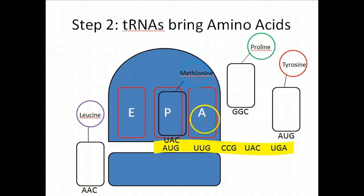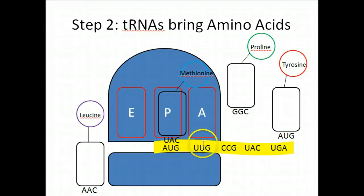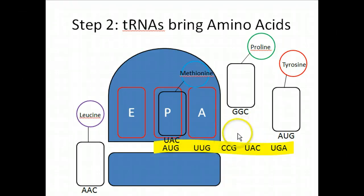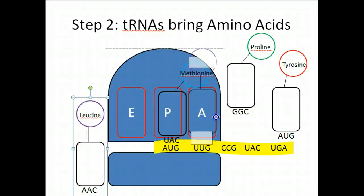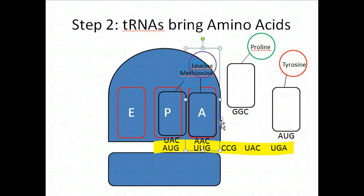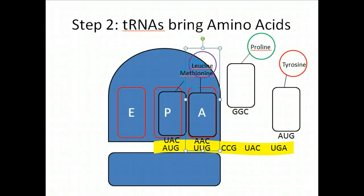Next, you need to bring in another tRNA carrying another amino acid. The next codon in your sequence is UUG. You can look up UUG in your codon table, or you can find a tRNA with a complementary anticodon. Looking over here, leucine has the anticodon AAC, which is perfectly complementary to UUG. So that tRNA comes in and complementary pairs with that codon. Now you have methionine and leucine basically strung together.